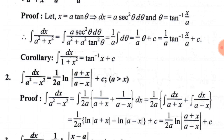Here, 1/(a² − x²) can be written as 1/[(a+x)(a−x)]. Doing partial fractions, we get (1/2a)·[1/(a+x) + 1/(a−x)]. Applying the integration sign to both terms, we get (1/2a) times [∫dx/(a+x) + ∫dx/(a−x)].